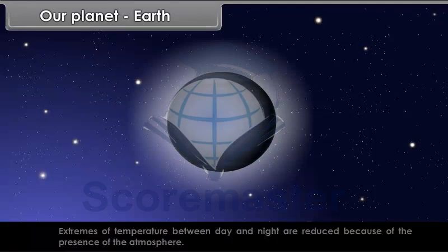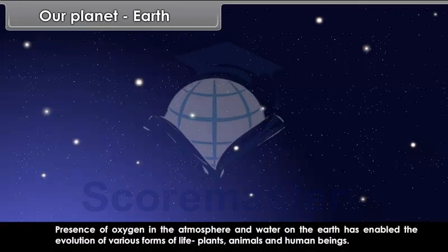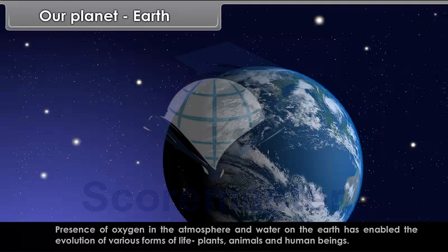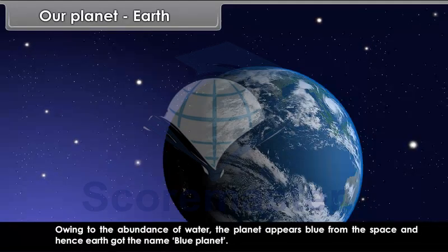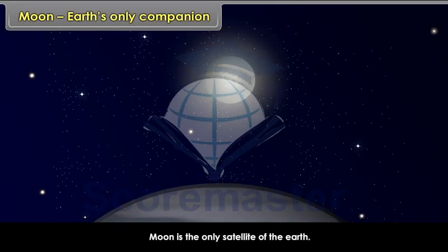There is abundance of water in solid, liquid and vapour state. Presence of oxygen in the atmosphere and water on the Earth has enabled the evolution of various forms of life: plants, animals and human beings. Owing to the abundance of water, the planet appears blue from the space, and hence Earth got the name Blue Planet. Moon is the only satellite of the Earth.